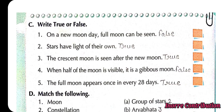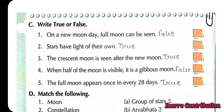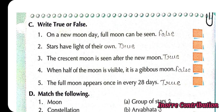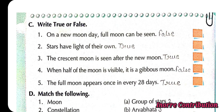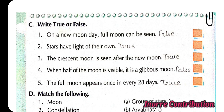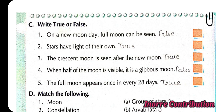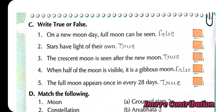Write true or false. First, on a new moon day, full moon can be seen. False. Second, stars have light of their own. True. Third, the crescent moon is seen after the new moon. True. Fourth, when half of the moon is visible, it is a gibbous moon. False. Fifth, the full moon appears once in every 28 days. True.